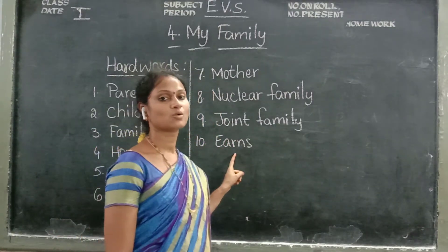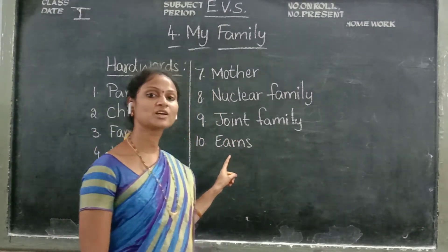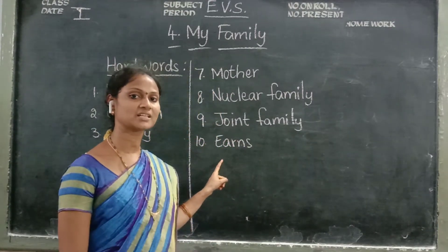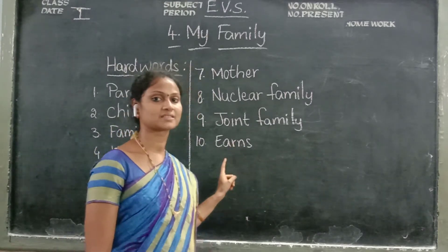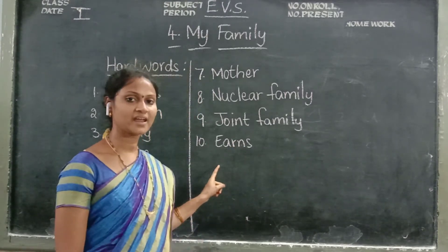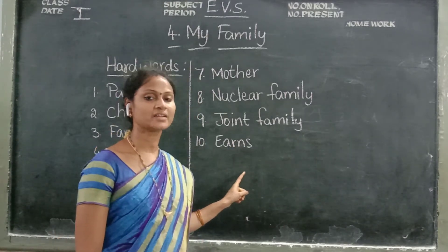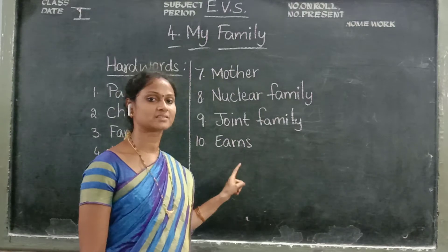Now the tenth one: years. What is the spelling of years, children? E-A-R-N-S. Years. E-A-R-N-S. Years.